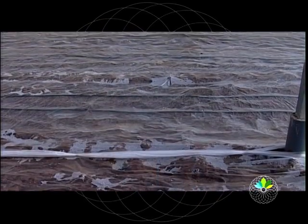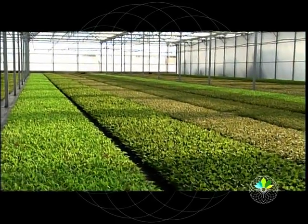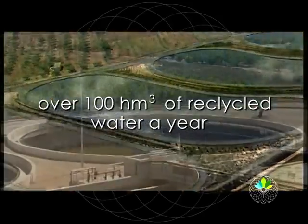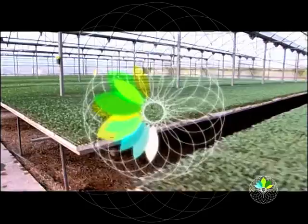Another example makes Murcia an excellent example to follow for water reuse and wastewater treatment. The region reuses more than 100 cubic hectometers of water per year, which is 25% of the national total.